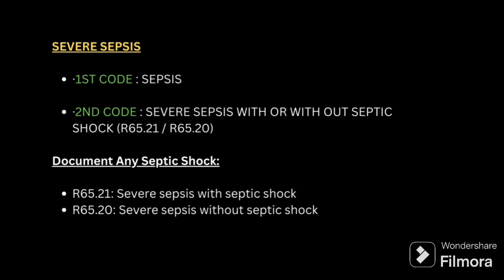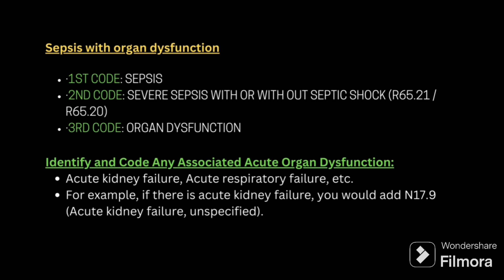Second guideline: patient admitted for severe sepsis. Even though the patient is admitted for severe sepsis, the primary code will always be for sepsis, and the second code should be for severe sepsis — with septic shock R65.21 or without septic shock R65.20. Third guideline: sepsis with organ dysfunction. If the word 'with' is present between two diagnoses, it means they are related — first code for sepsis, second for severe sepsis with or without septic shock, third for organ dysfunction such as renal failure or respiratory failure.